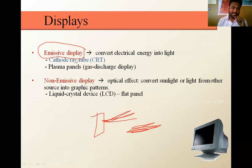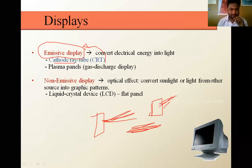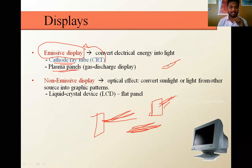The CRT monitor — cathode ray tube — comes under the emissive display. In this CRT monitor, a high intensity electron beam is going to be generated. For emissive displays, the first one is the CRT type monitor, and the second one is the plasma monitor, which also functions on the same principle. In the cathode ray tube, the beams are electron beams, while in plasma panels, those are gas-discharged beams. That is the difference.